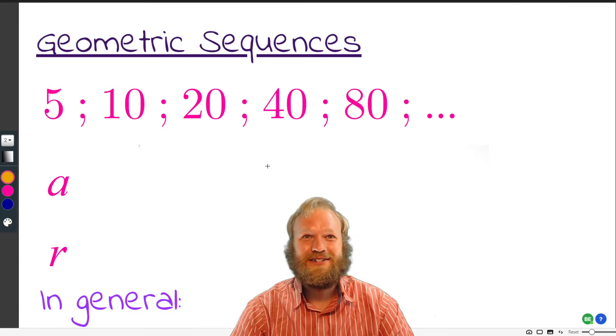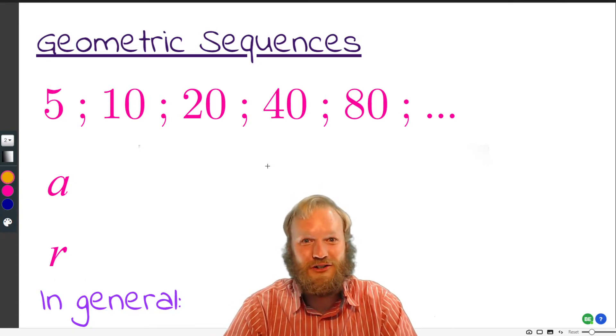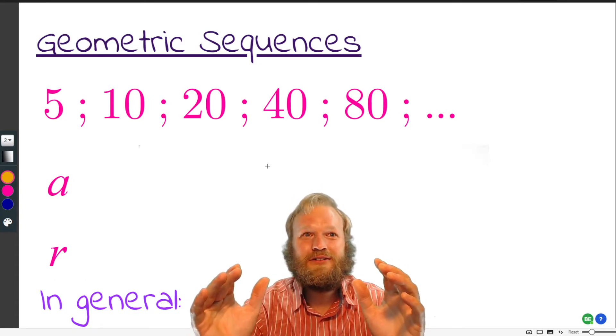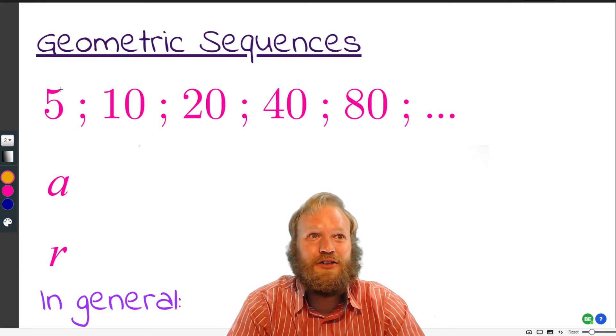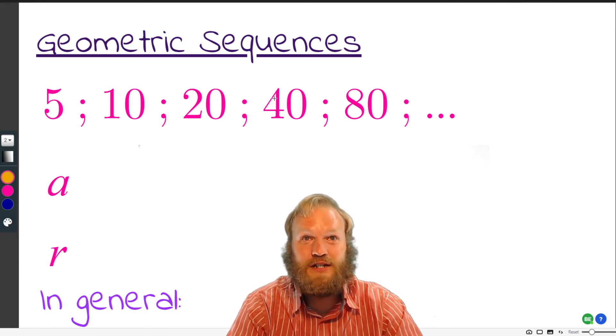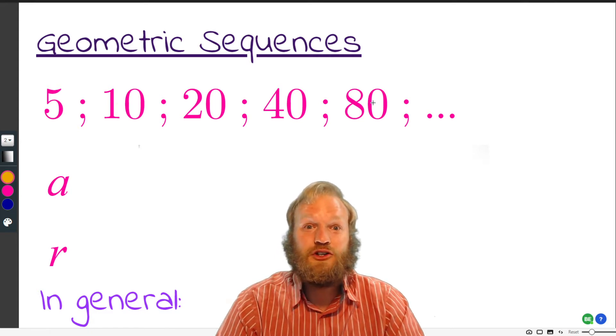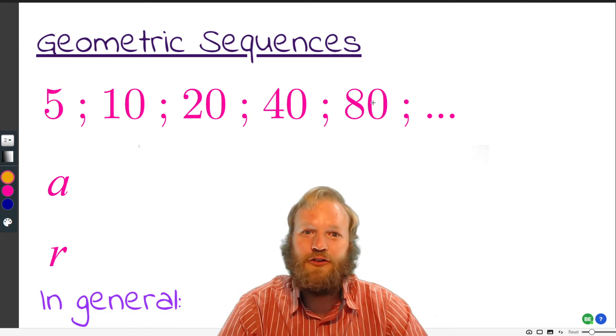So we've got geometric sequences, or geometric progressions, and just what looks like a key difference in this sequence: 5, 10, 20, 40, 80.